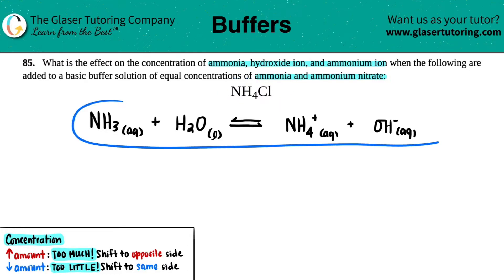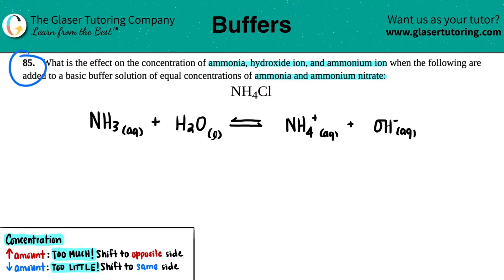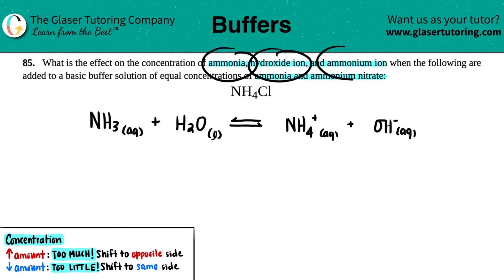I have my balanced equation already. If you want a recap as to why we chose this equation, you could check out the first one in the playlist, 85A, where we go over in depth how we got this equation. Basically, the question is asking what's happening to the ammonia, the hydroxide ion, and the ammonium ion.